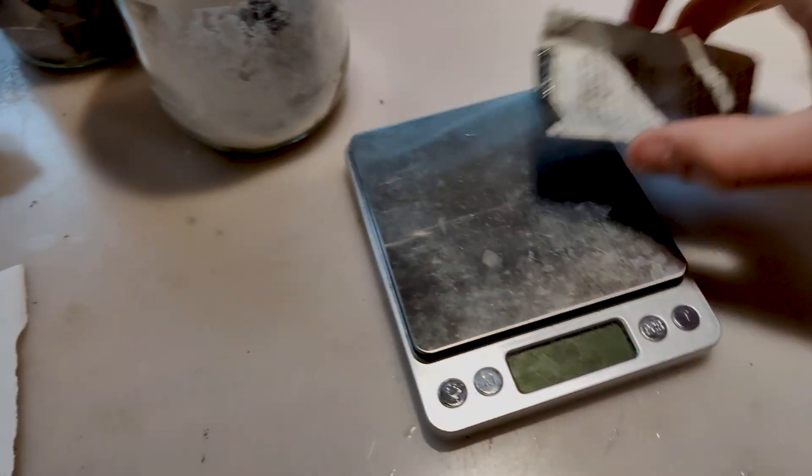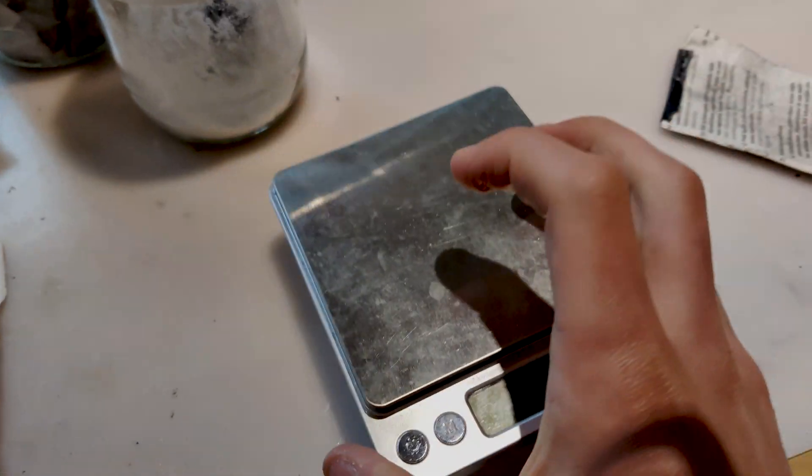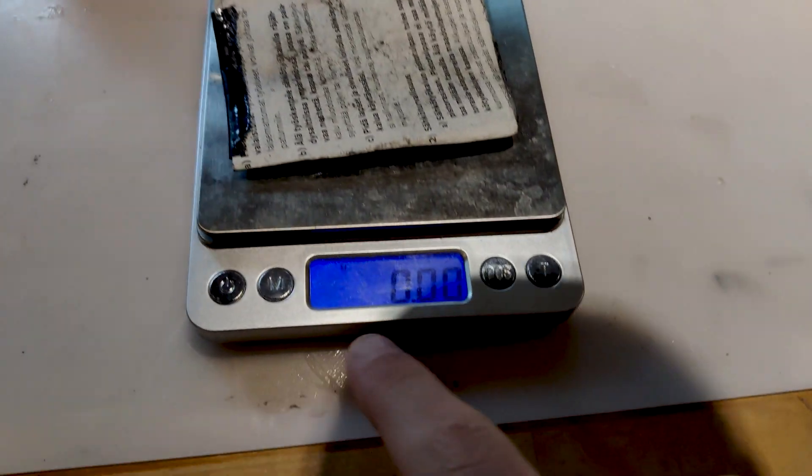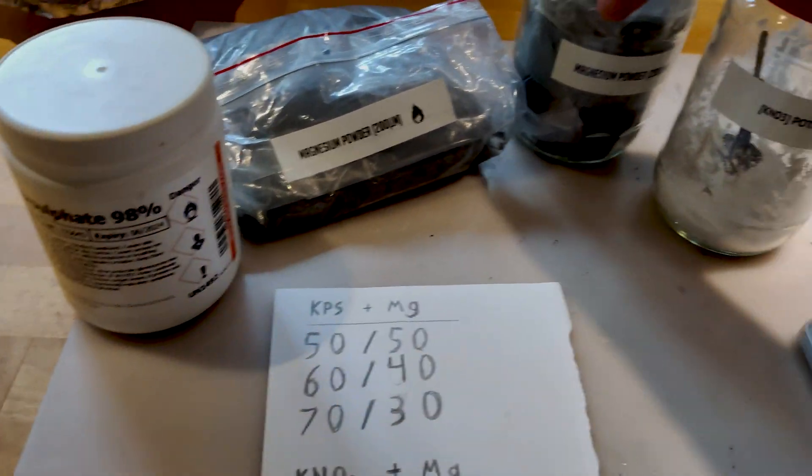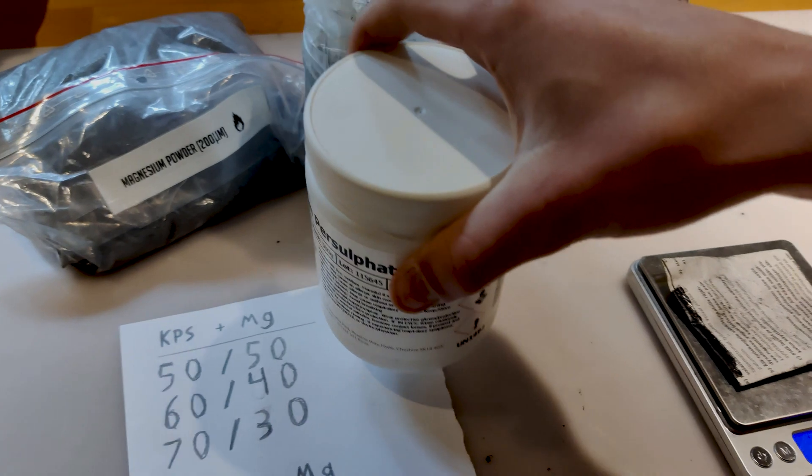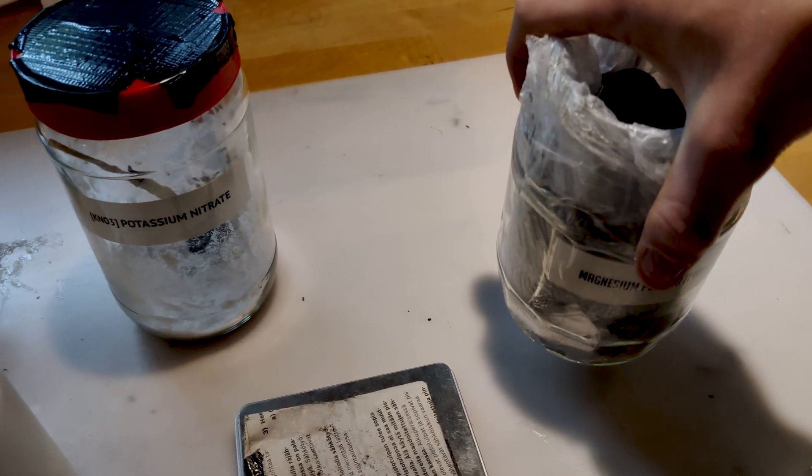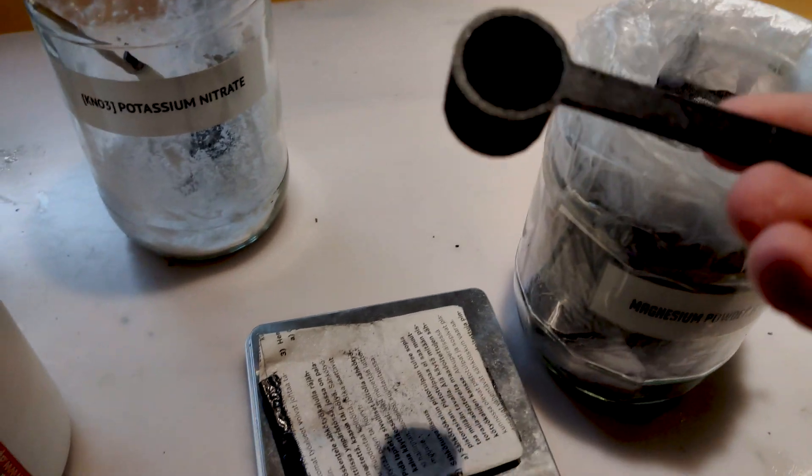Now we can start adding the two components. The procedure is the same for both of these flash powders. Let me start with the magnesium. I'll make two grams, which means if I'll make potassium persulfate...